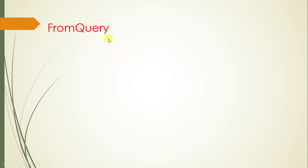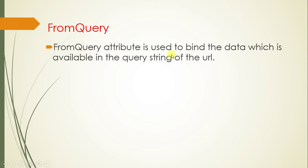In this video we will learn about the FromQuery attribute in ASP.NET Core Web API. This attribute is used to bind data available in the query string of the URL. If you use the FromQuery attribute on a parameter of an action method, it will force the Web API to get the data only from the query string of the URL.